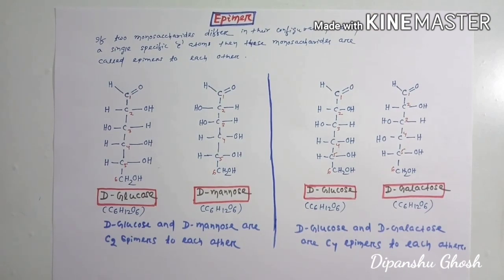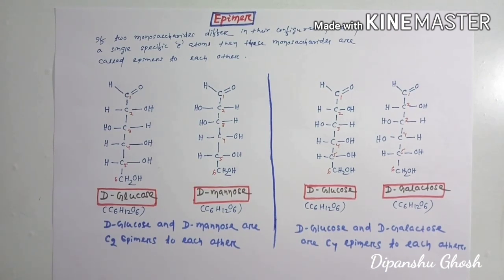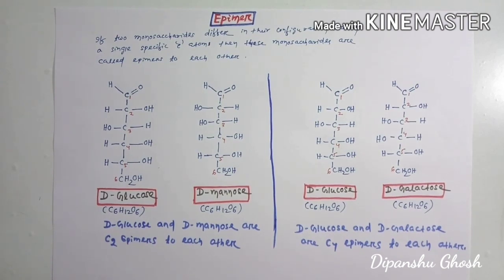Hello friends, welcome back to my channel. Today we are going to talk about epimers. Epimers can be defined as: if two monosaccharides differ in their configuration around a single specific carbon atom, then these monosaccharides will be called as epimers. That means if we take two monosaccharides which differ by the configuration around only one carbon atom, they will be called as epimers.